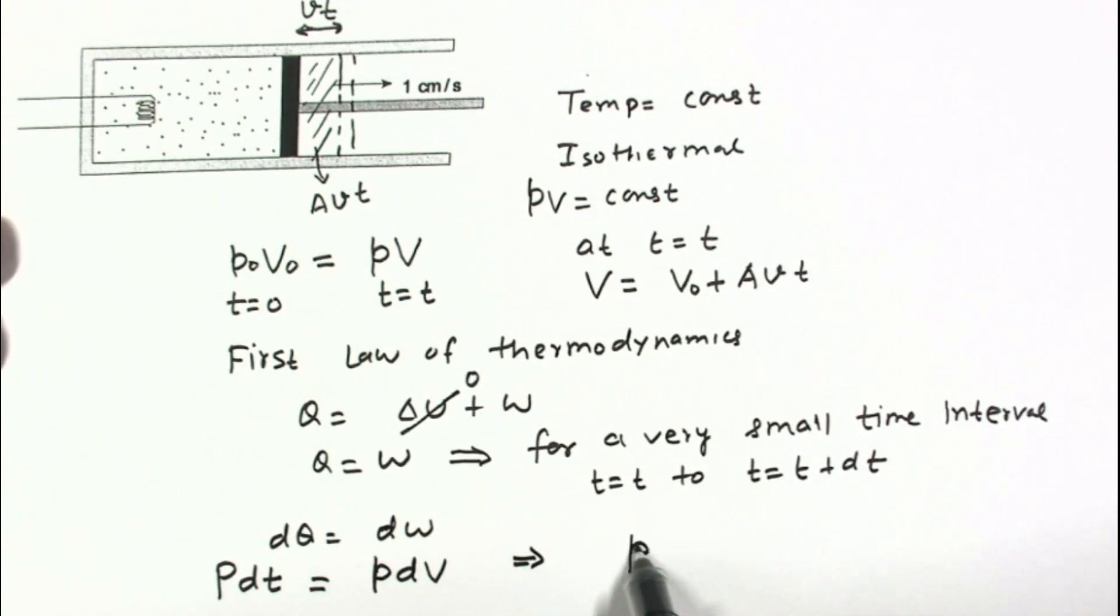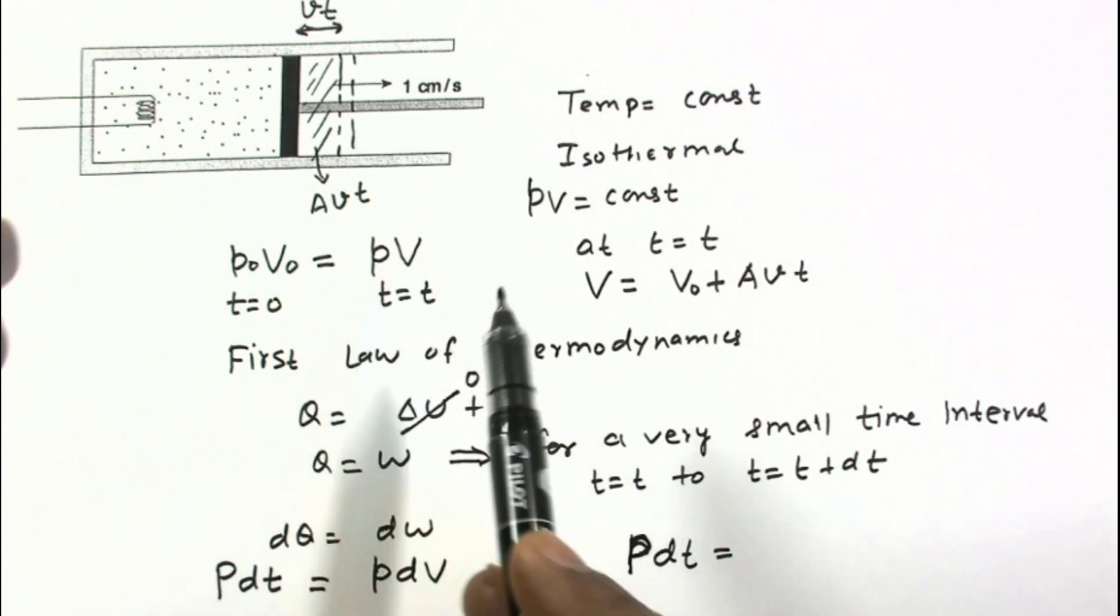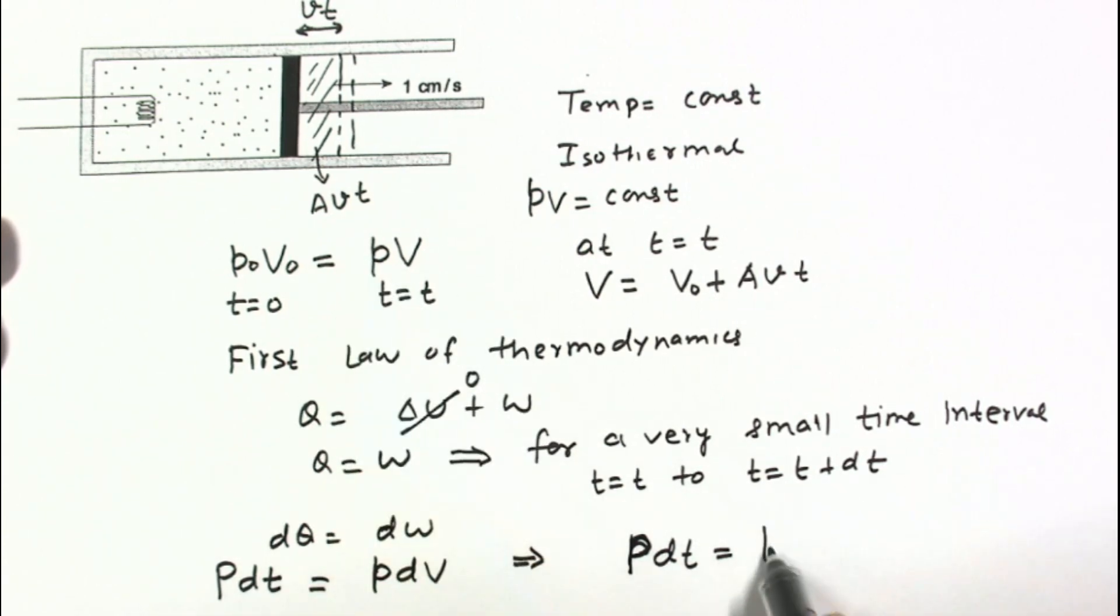So further we can write, this is capital P used for power, P dT. This pressure we can calculate from the equation above, so this pressure is known to us from this equation.